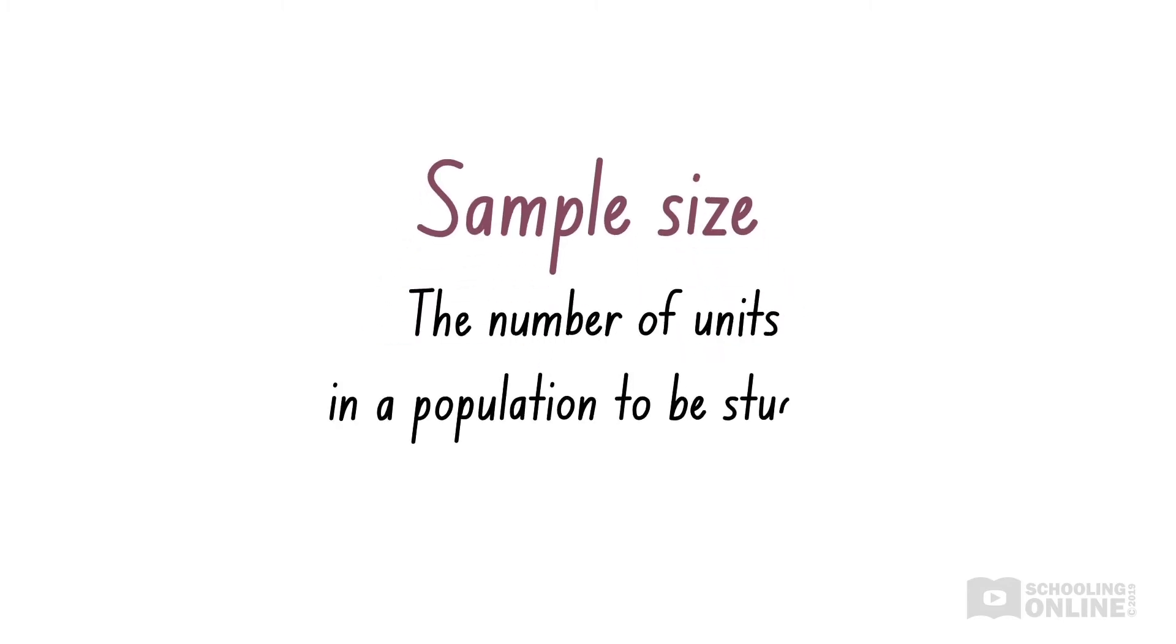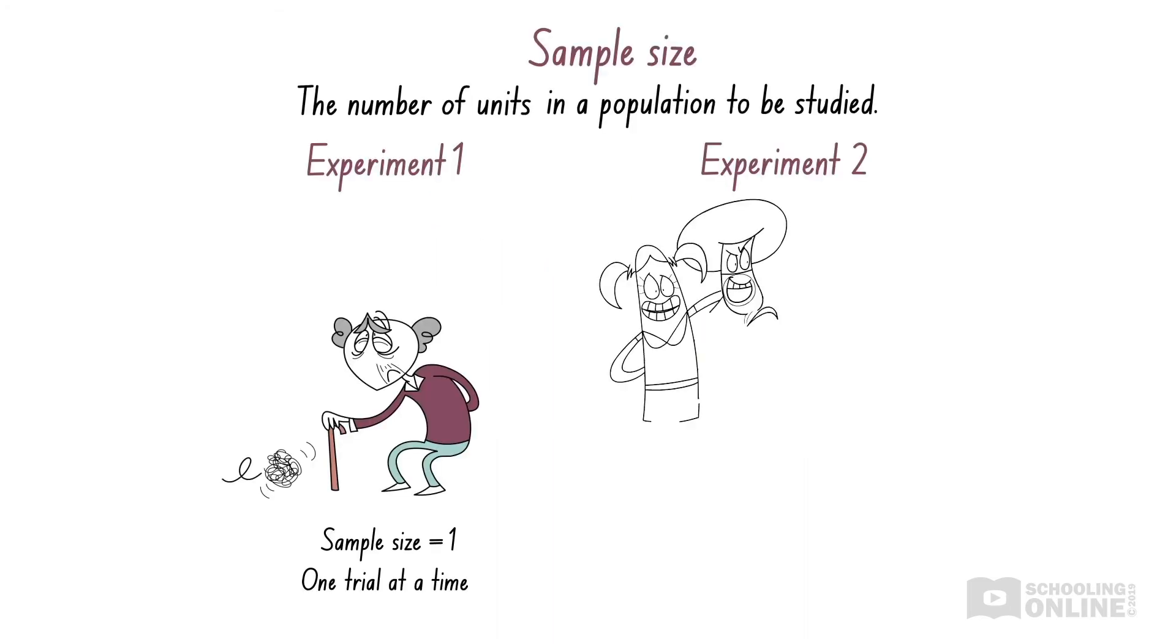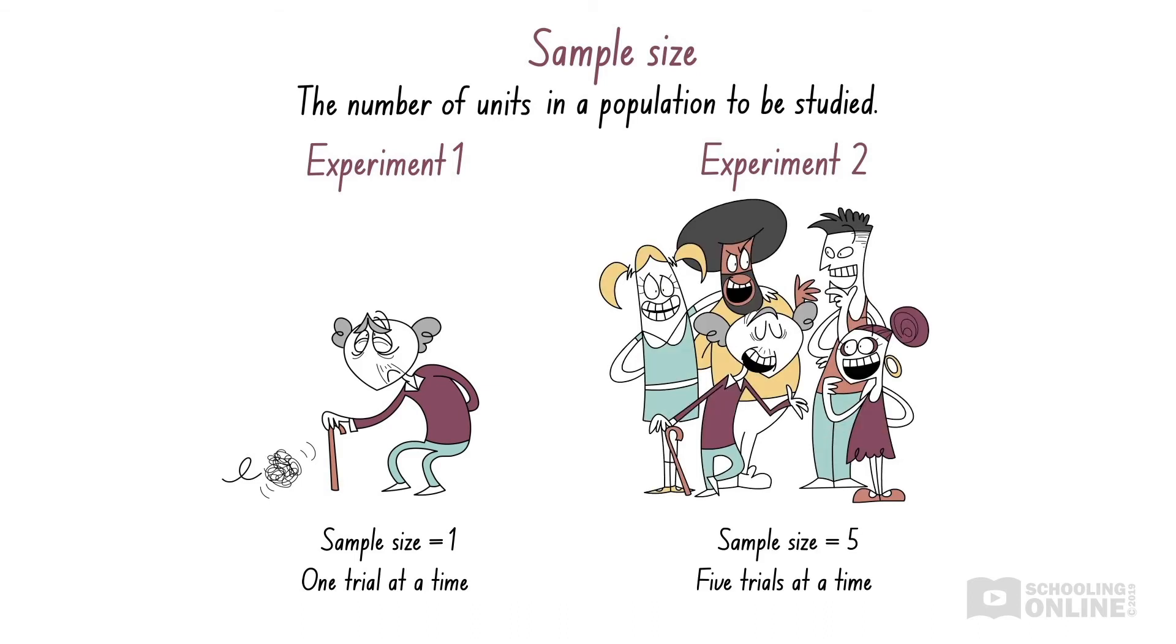This is achieved by increasing the sample size, which is the number of units in a population to be studied. Increasing sample size has a similar effect to conducting more trials. For example, even increasing the sample size from one to five subjects will improve the reliability of an experiment.